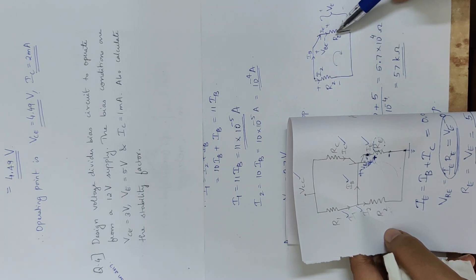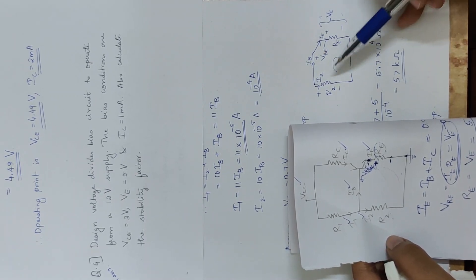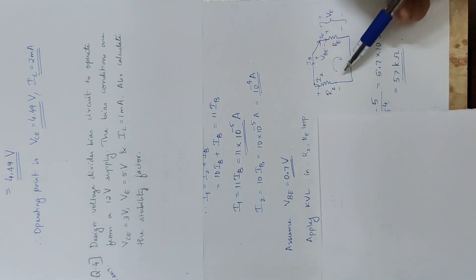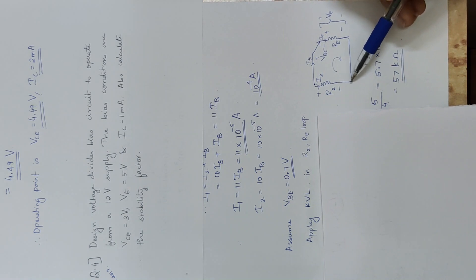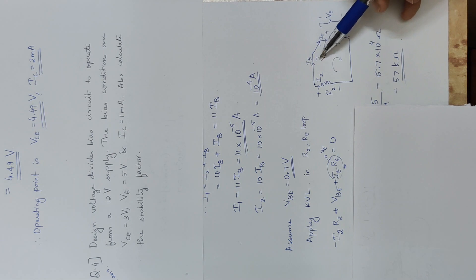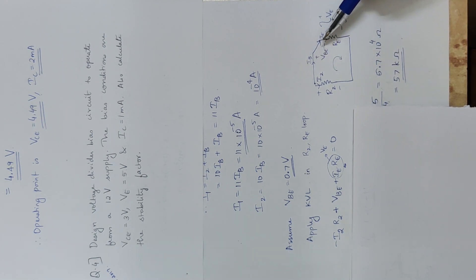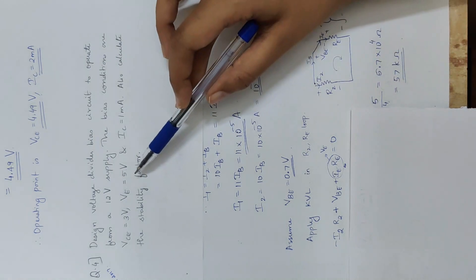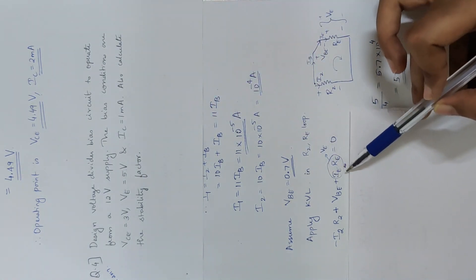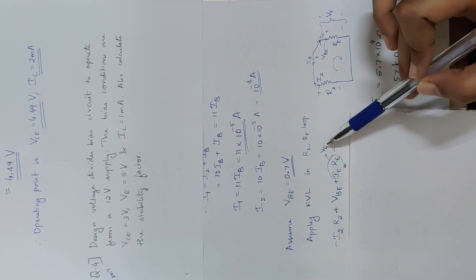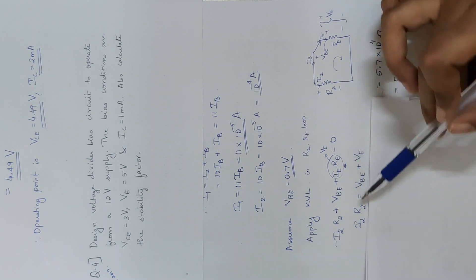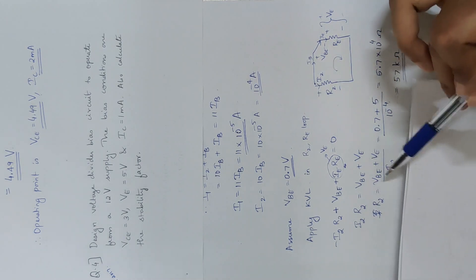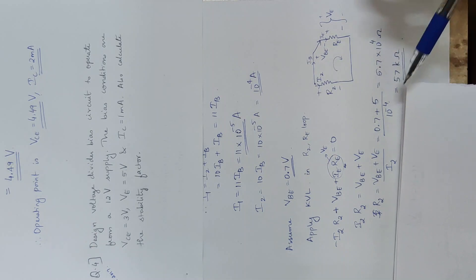Applying KVL in this inner loop, starting with sign minus: minus I2·R2 plus VBE plus IE·RE equals 0. Substituting IE·RE directly as VE equal to 5V. This gives us the equation to solve for R2.